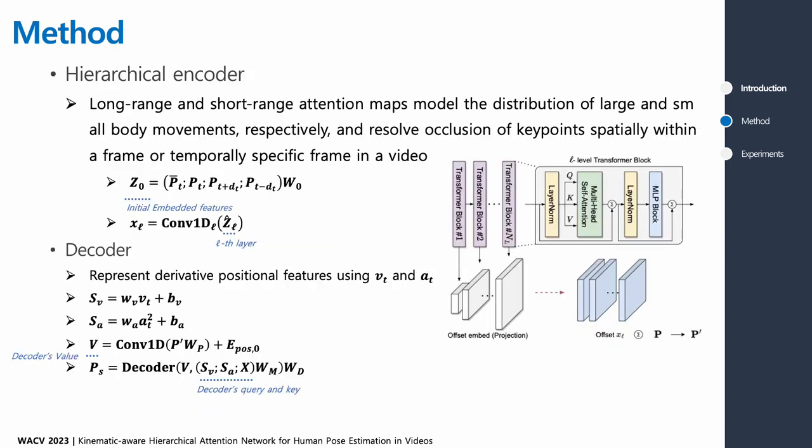The hierarchical encoder creates positional offset per encoder layer by increasing the number of channels hierarchically so that we can fully consider temporal features while considering spatial information. Long-range and short-range attention maps model the distribution of large and small body movements respectively and resolve occlusion of keypoints, spatially within a frame or temporally specific frame in a video.